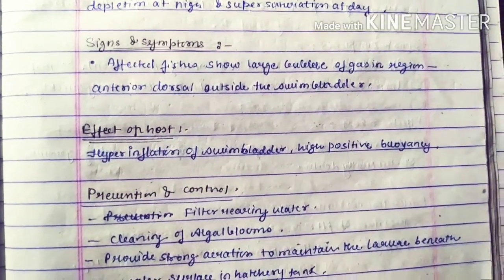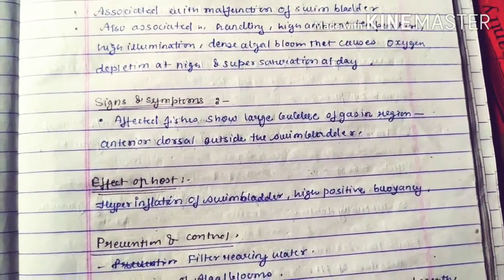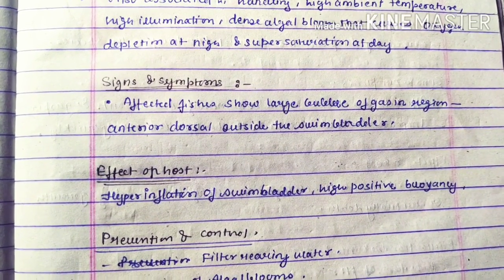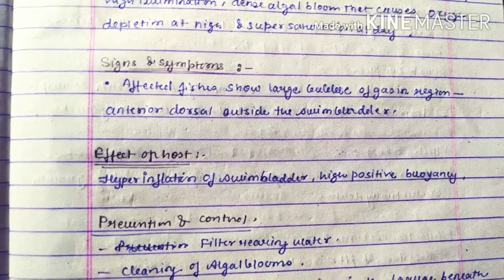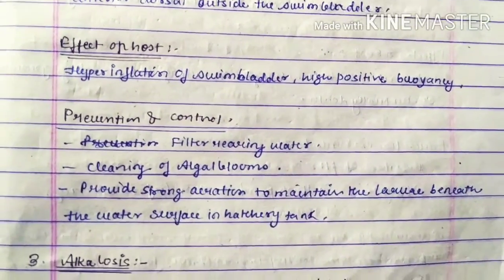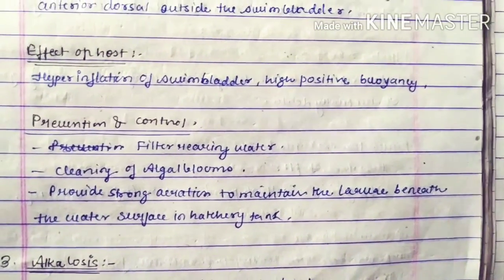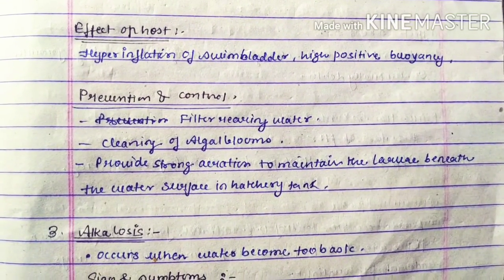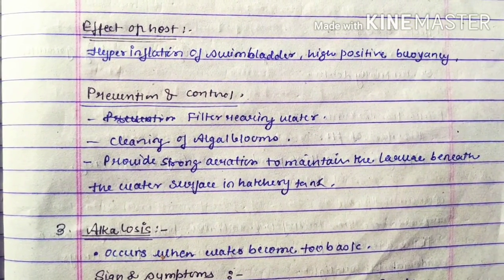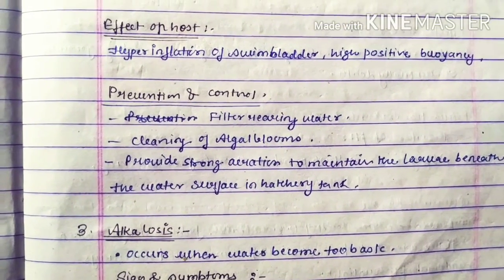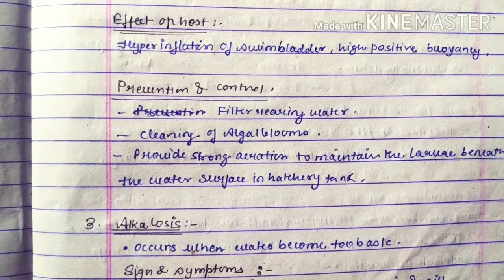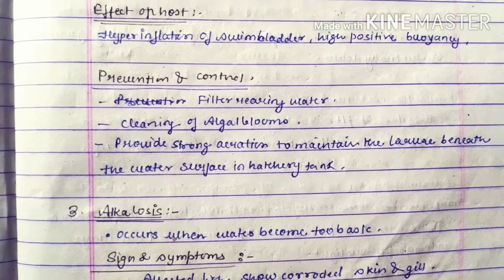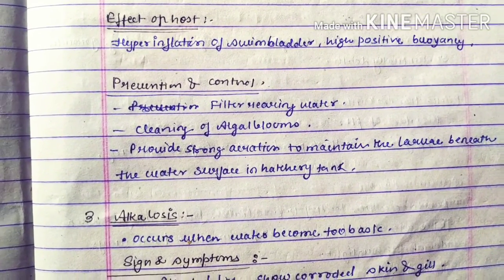Signs and symptoms of the affected fish show a large bubble of gas in the anterior dorsal region outside the swim bladder. Effects on the host include hyperinflation of the swim bladder and high positive buoyancy. Prevention and control include filtering rearing water, cleaning of algal bloom, and providing strong aeration to maintain the larvae beneath the water surface in the hatchery tank.